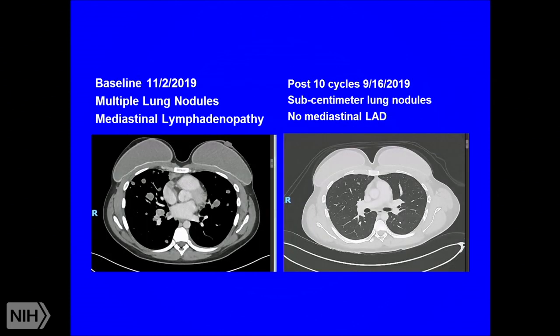Triple-negative breast cancers are considered more immunogenic — they tend to have high T-cell infiltration into the tumor microenvironment compared to other breast cancer subtypes, which may explain why immunotherapy is more effective in this group. This patient was also BRCA-mutated, making the PARP inhibitor particularly effective in her case.